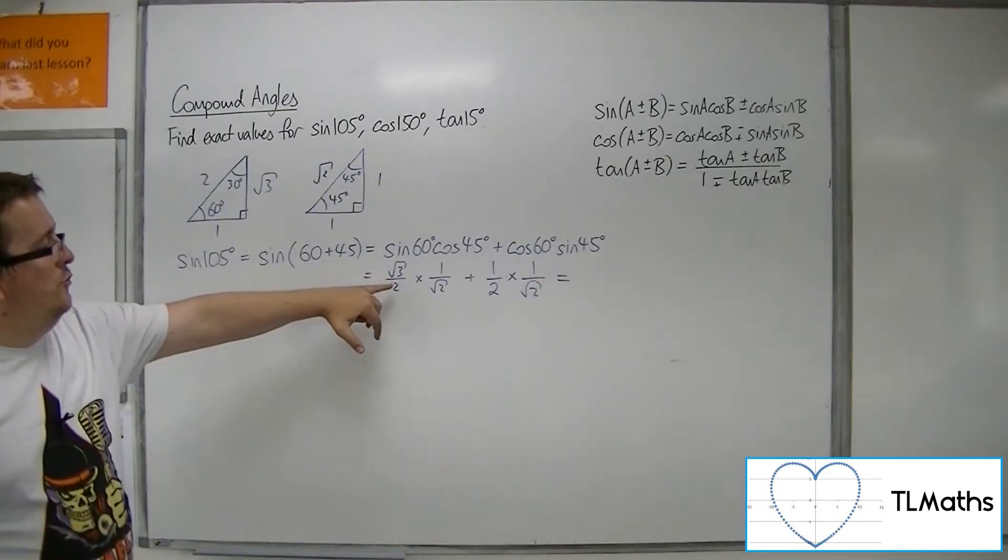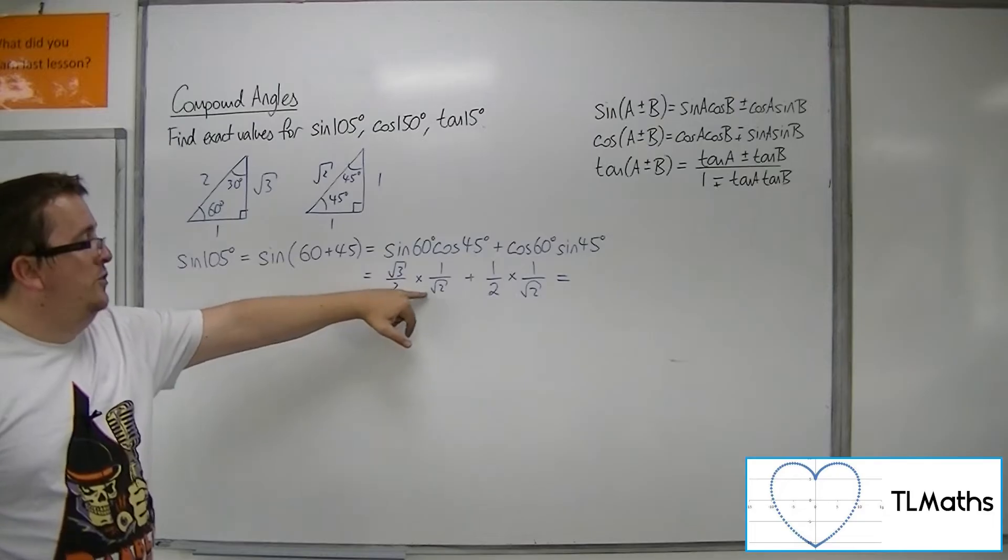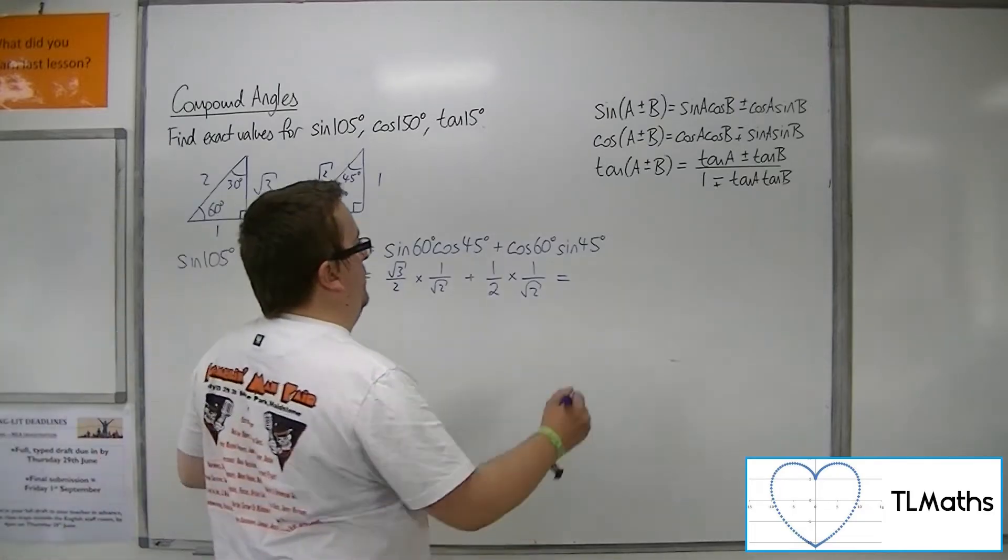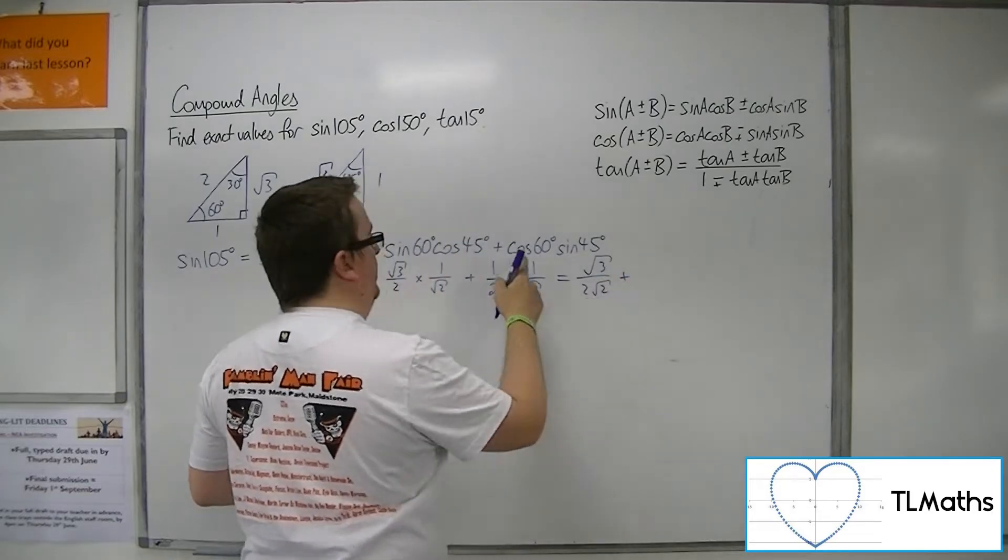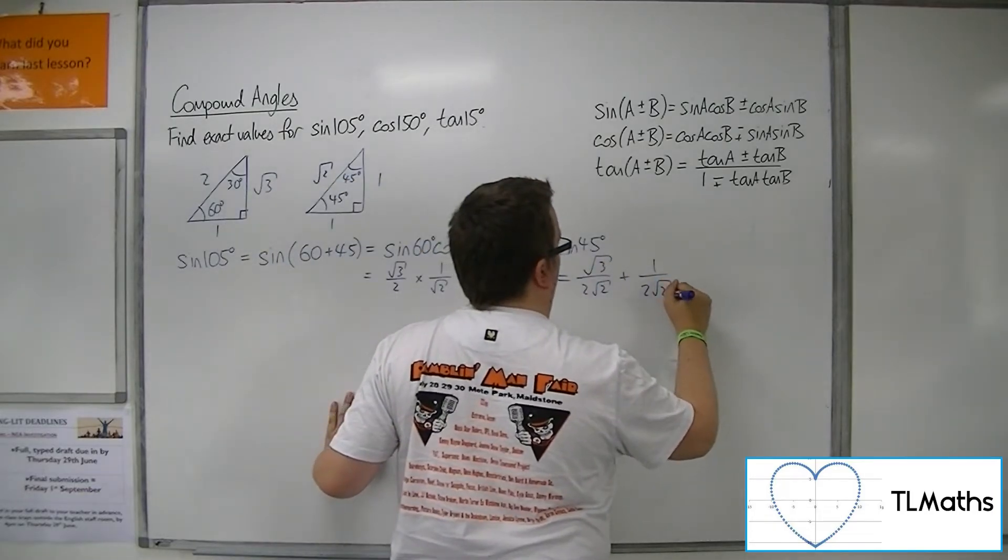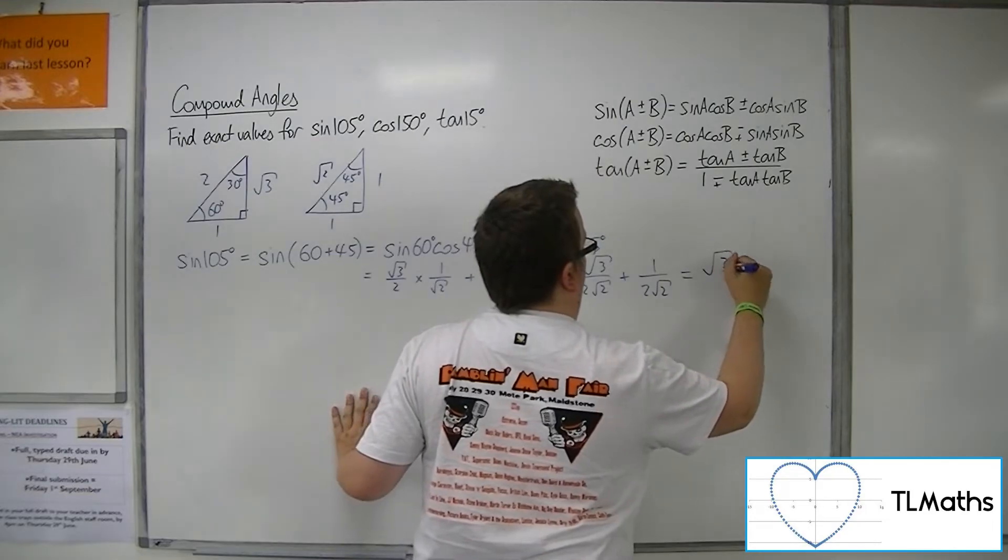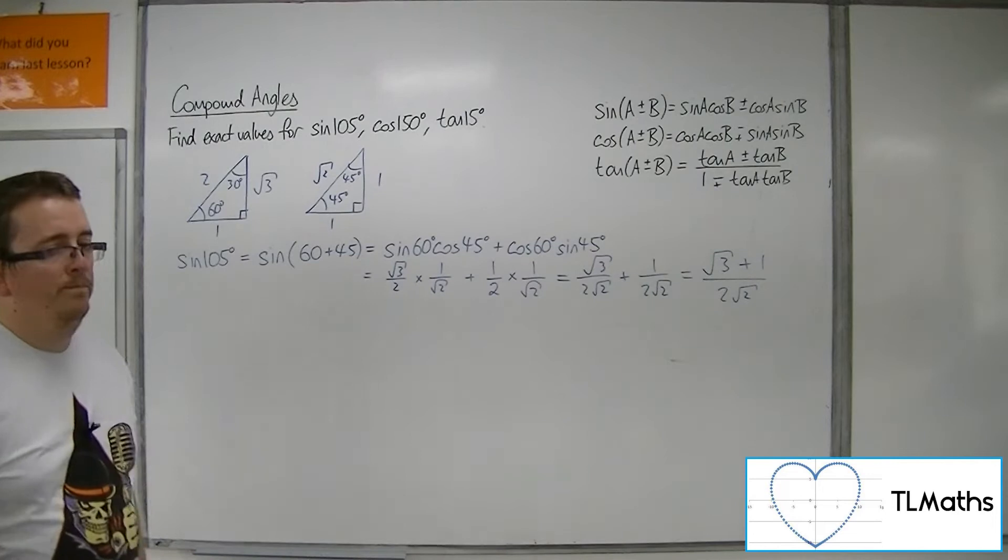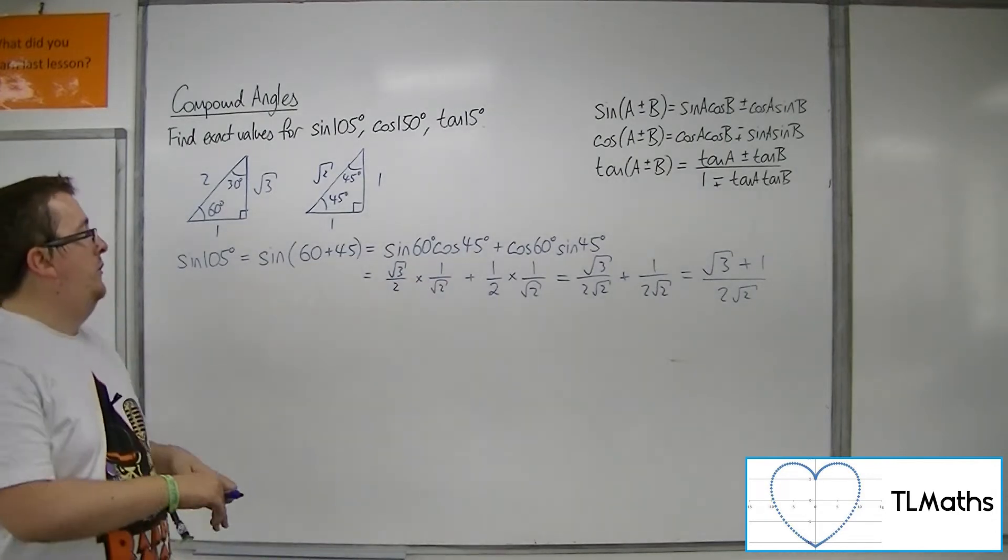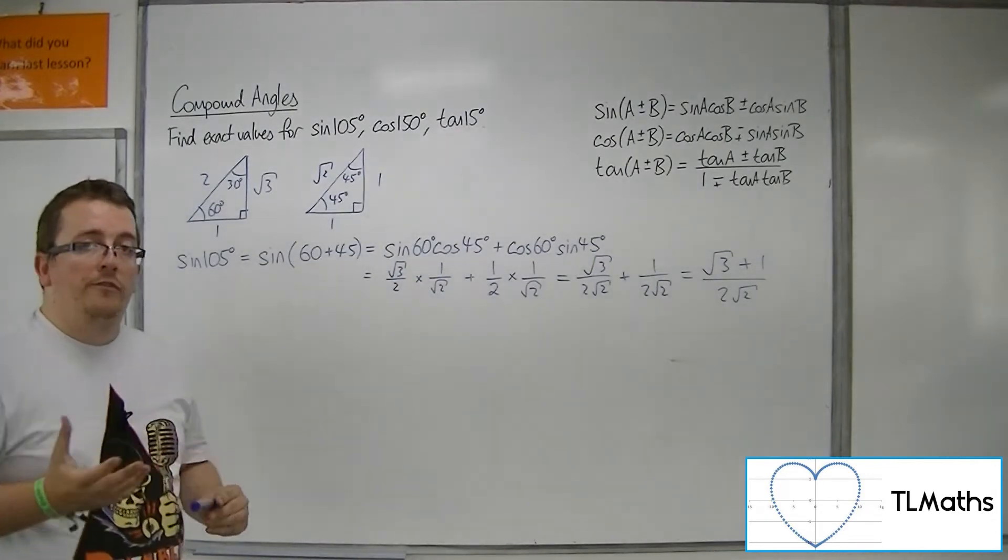We've got root 3 over 2 times 1 over root 2, so we've got root 3 over 2 root 2 plus 1 over 2 root 2. So that's root 3 plus 1 over 2 root 2, and that is the exact value of sine of 105 degrees.